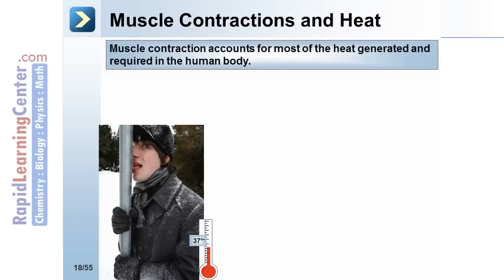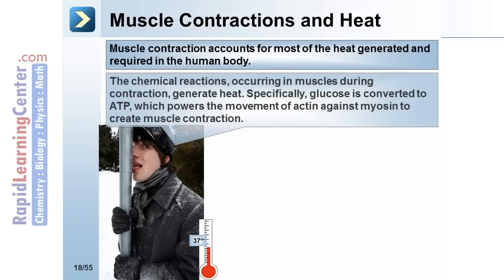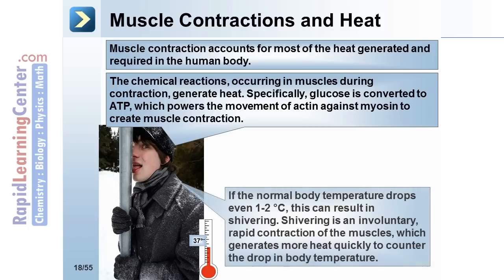Muscle contraction accounts for most of the heat generated in the human body. The chemical reactions occurring in muscles during contractions generate heat. Specifically, glucose is converted to ATP, which powers the movement of actin against myosin to create muscle contraction. If the normal body temperature drops even 1 to 2 degrees centigrade, this can result in shivering — an involuntary rapid contraction of the muscles which generates more heat quickly to counter the drop in body temperature.